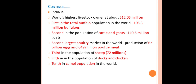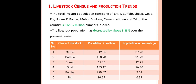India has 105.3 million buffaloes, and is second in the population of cattle and goats with 145.5 million goats. India is the second largest poultry market in the world with production of 63 billion eggs and 649 million poultry for meat. India ranks third in population of sheep with 72 million, fifth in the population of ducks and chicken, and tenth in camel population in the world.